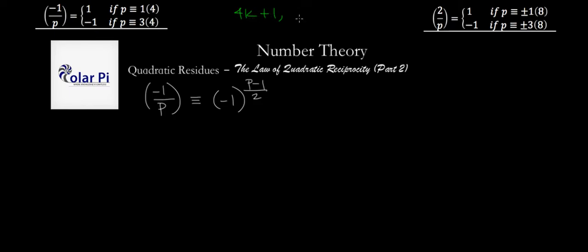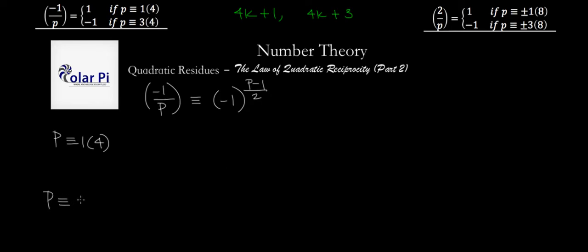Every odd integer is of the form 4k+1 or 4k+3. So because P is an odd prime, we know that P is either congruent to 1 mod 4 — that is, P is of the form 4k+1 — or P is of the form 4k+3, in which case it would be congruent to 3 mod 4. One of these two has to be true about our prime P.